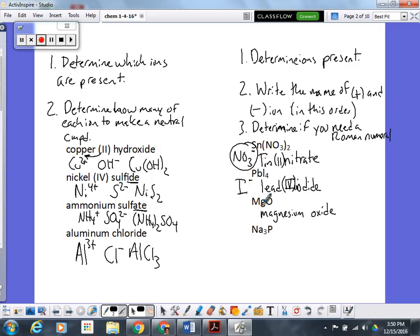The last one is sodium, or sodium phosphide is going to be the name. Na is sodium. P is phosphorus, which becomes phosphide. Sodium is in group one. It does not need a Roman numeral, so I am done with that name.